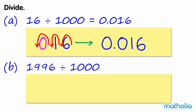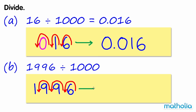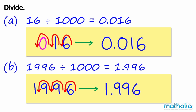B. Find 1996 divide 1000. Shifting the decimal point three places to the left gives 1.996. So 1996 divide 1000 equals 1.996.